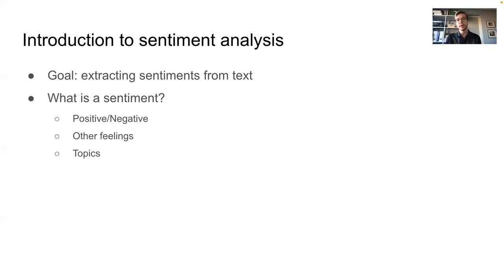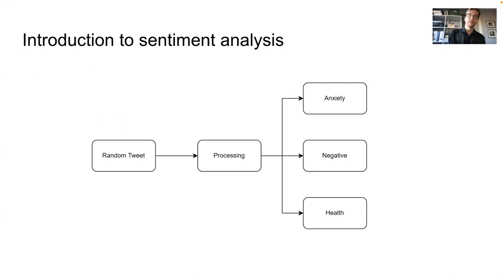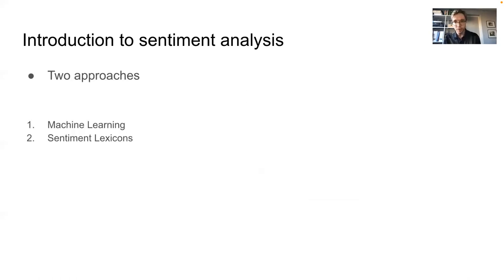The next slide is just a brief input-output flowchart. Let's say you want to analyze a random tweet — you take this tweet, you do some sentiment processing on it, and out come these categories correlated to this tweet. It doesn't have to be a tweet — it can be any type of text, a corpus of text, whatever type of text you want.